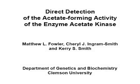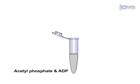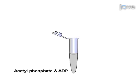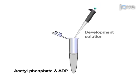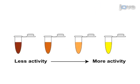This experiment aims for a direct measure of the acetate-forming activity of acetate kinase. Initiate the reaction by adding enzyme to a reaction mixture containing the acetyl phosphate and ADP substrates. Then add hydroxylamine hydrochloride to convert the remaining acetyl phosphate to acetyl hydroxamate. Add development solution to convert the acetyl hydroxamate to a colored ferric hydroxamate complex that can be measured spectrophotometrically.